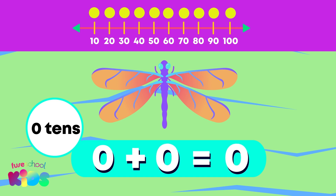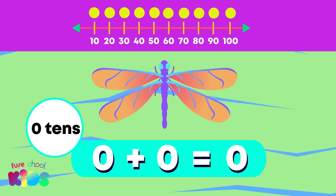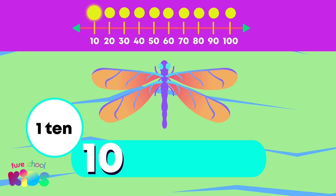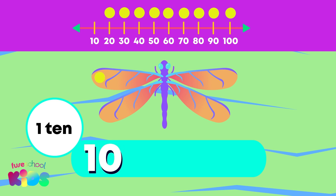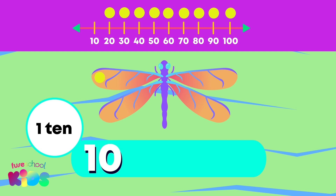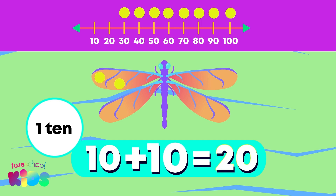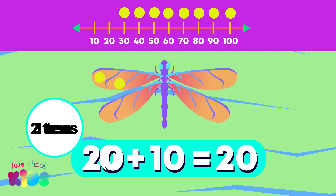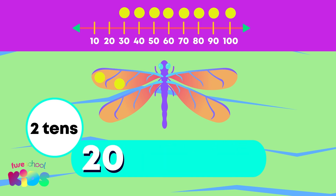0 tens is 0. Let's add one more 10. 1 ten is 10. Let's add one more 10. 2 tens is 20.